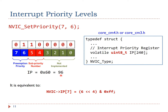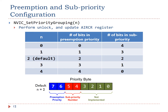In the NVIC data structure, interrupt priority registers are mapped to a byte array, with each register holding four priority bytes. The NVIC_SetPriority statement is equivalent to shifting the priority value left by 4 bits and storing the result in the corresponding interrupt priority byte. The number of bits in the preemption priority and sub-priority fields can be configured using NVIC_SetPriorityGrouping, which modifies the AIRCR (Application Interrupt and Reset Control Register) after an unlocking sequence. For example, if N is 4, all four bits are assigned to preemption priority, yielding 16 preemption priority levels.